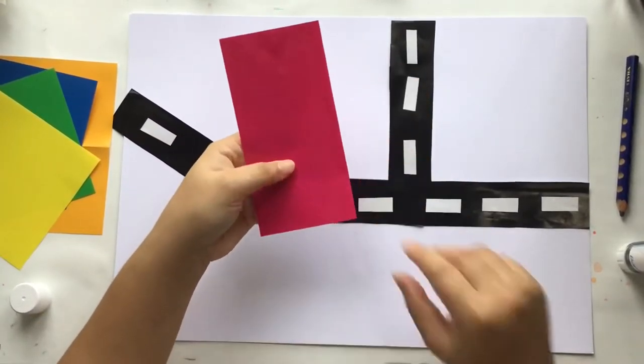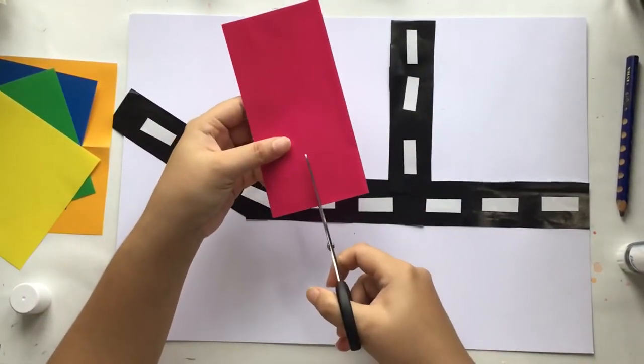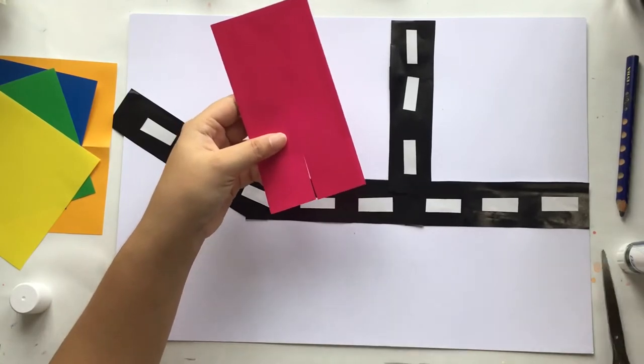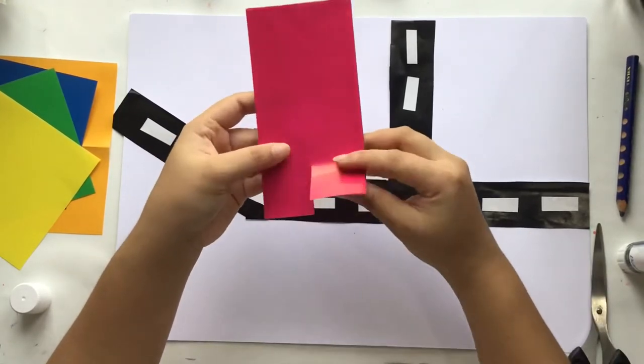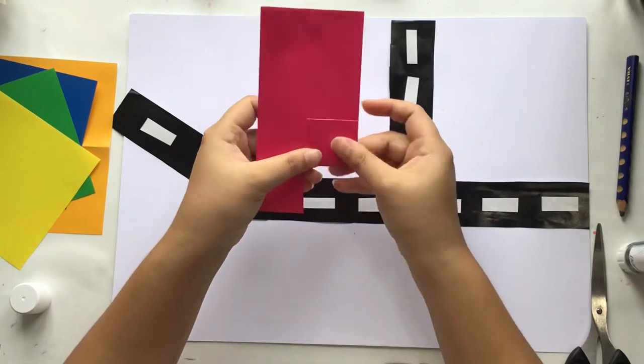On the bottom part, cut just a little bit, a tiny piece, and then fold it for the standing base of the buildings.